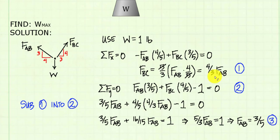So I substituted 4/3 FAB into equation 2 here for force BC, and simplifying it, I get that force AB is equal to 3/5.